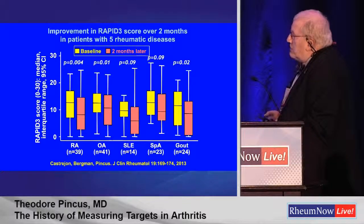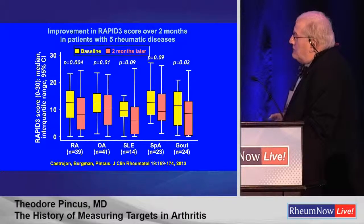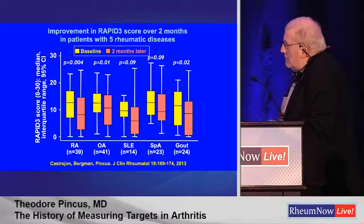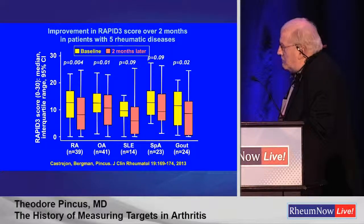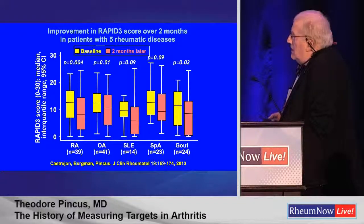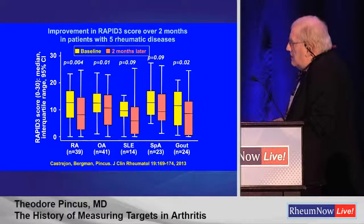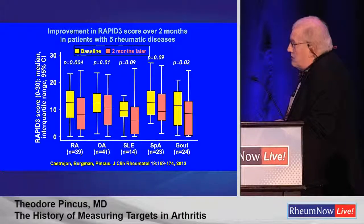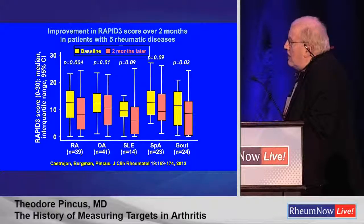Perhaps more helpful is the fact that these are data from Dr. Castorhone and from Dr. Bergman's office — new patients — showing a 30% improvement in RA, SLE, spondyloarthropathies, and gout, and only 15% in OA. And some of you may have seen, we've recently published that OA...